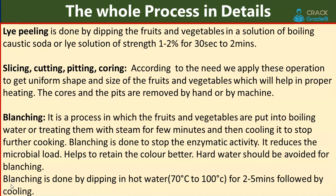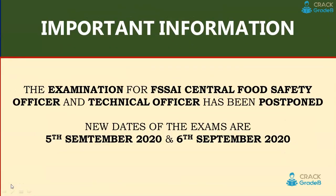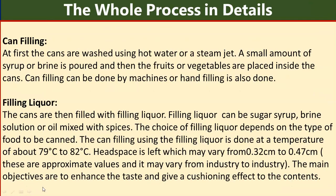Blanching is a process in which fruits and vegetables are put into boiling water or treated with steam for a few minutes, then cooled to stop further cooking. Blanching is done to stop enzymatic activity, reduce microbial load, and retain color. Hard water should be avoided for blanching. The temperature is between 70°C to 100°C and time is two to five minutes, followed by cooling.